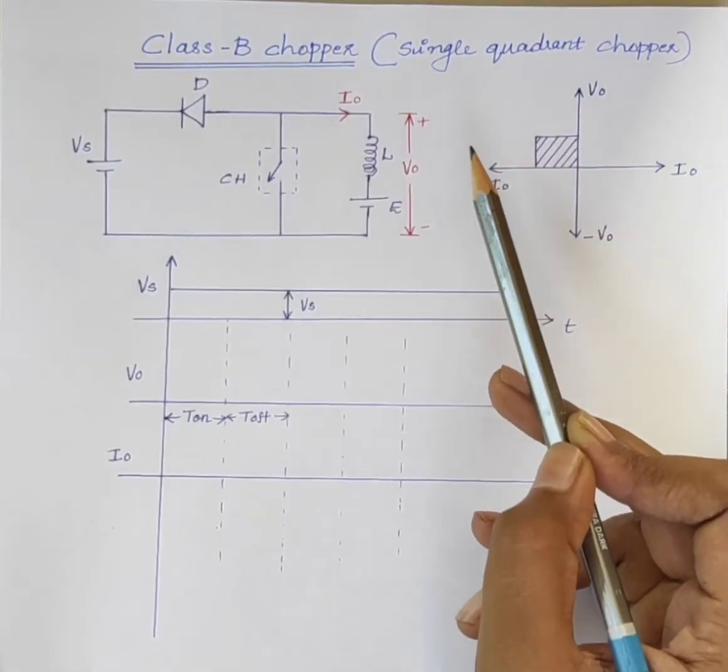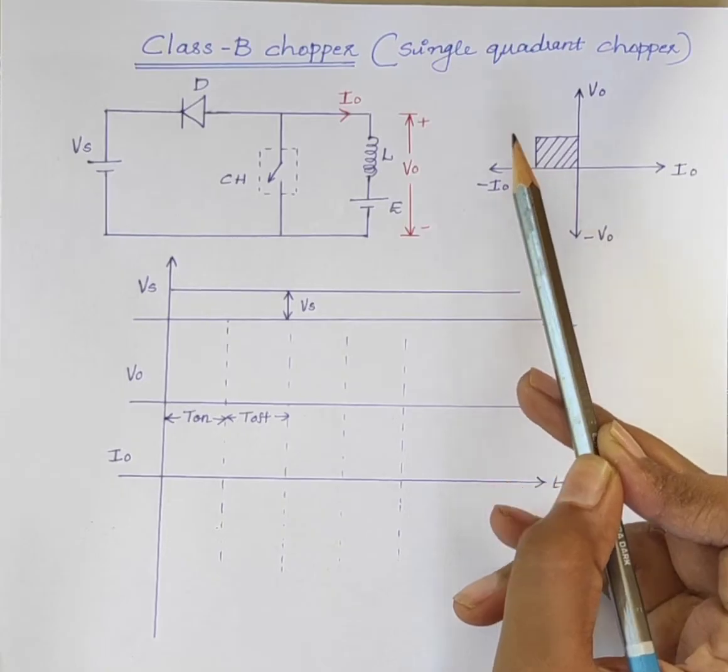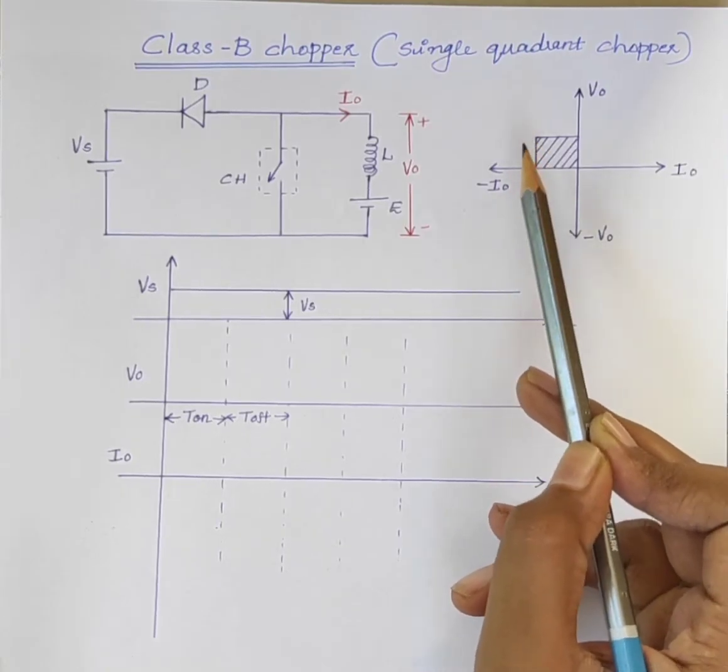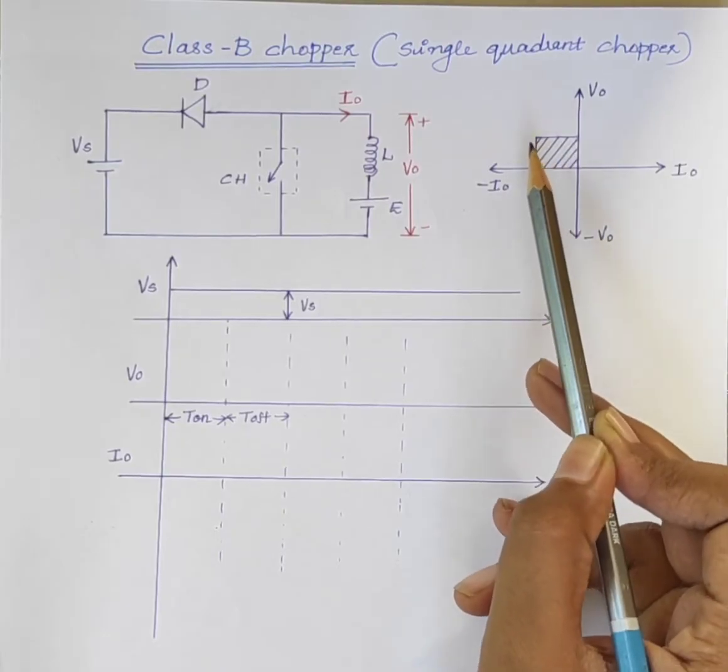Class B chopper is also known as second quadrant chopper, because the operation of this chopper is confined to the second quadrant.